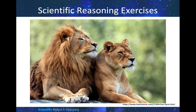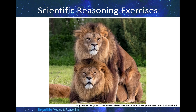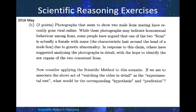Before we start our next question, let's take a look at this picture. In this picture, we have two lions. The one on the left is a male lion, while the one on the right is a female. You can see that the male lion has a mane on his head, while the female lion does not have a mane. These two lions appear to be mating, but both of them seem to be male. In May 2016, photographs that seem to show two male lions mating went viral online. While these photographs may indicate homosexual behavior among lions, some people have argued that one of the two lions is actually a female with a mane due to genetic abnormality. In response to this claim, others have suggested analyzing the photographs in detail, with the hope of identifying the sex organs of the two concerned lions.